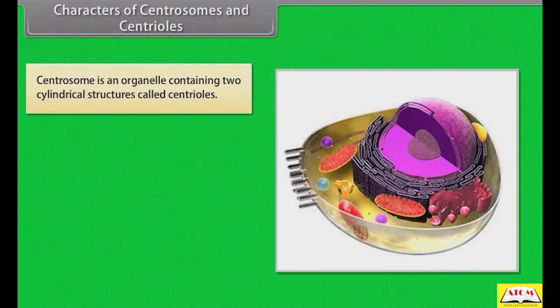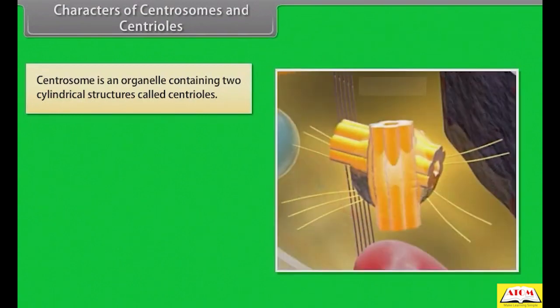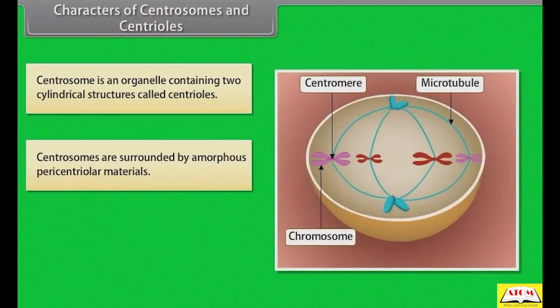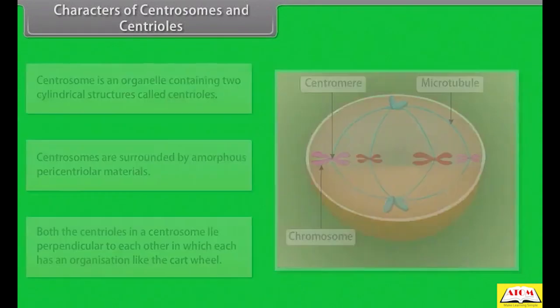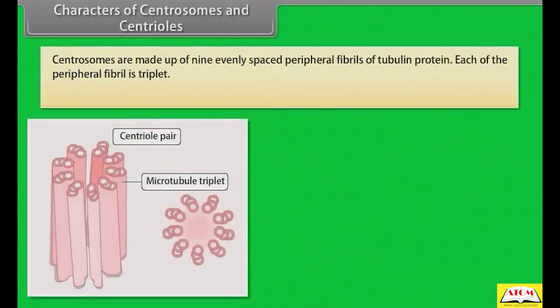Centrosome is an organelle containing two cylindrical structures called centrioles. Centrosomes are surrounded by amorphous pericentriolar materials. Both the centrioles in a centrosome lie perpendicular to each other, in which each has an organization like a cartwheel. Centrosomes are made up of nine evenly spaced peripheral fibrils of tubulin protein, and each of the peripheral fibrils is a triplet.